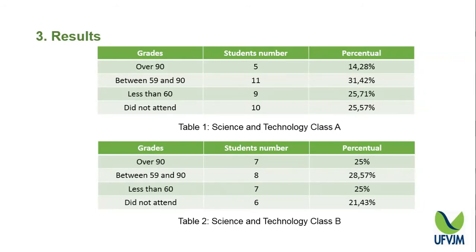In Science and Technology Class A, around 16 students had a better grade, and in Science and Technology Class B, 15 students had a great grade. The learning improvement was very clear and evident when observing these grades.